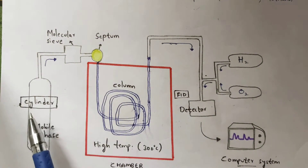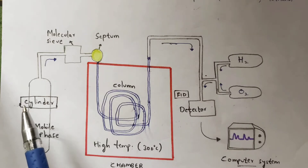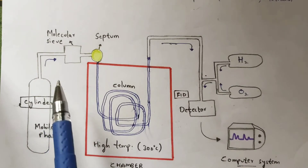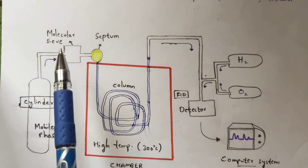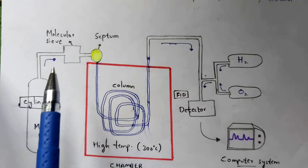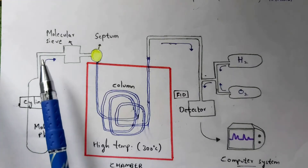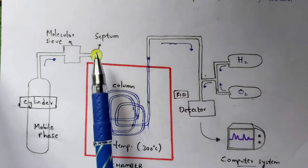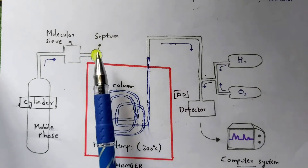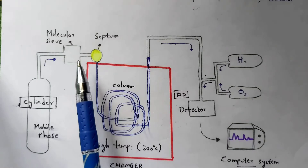Looking at the apparatus: firstly there is a cylinder containing the mobile phase gas, which is helium or nitrogen. Once this gas is passed on, it reaches the molecular sieve. The molecular sieve helps remove unwanted water vapor, hydrocarbons, and oxygen present in the gas. The gas then moves to the septum, where the sample is injected.